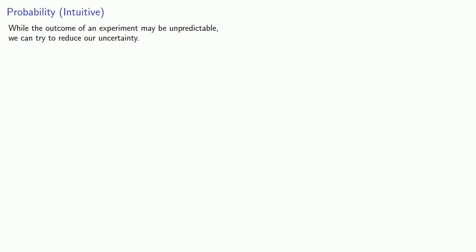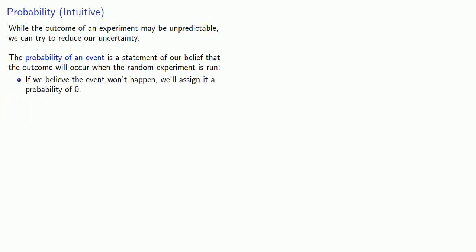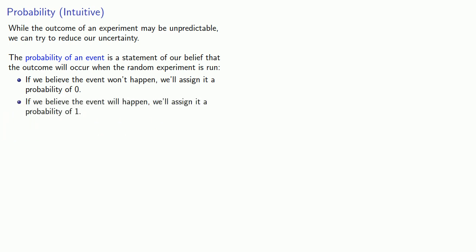So let's approach probability from an intuitive standpoint first. While the outcome of an experiment may be unpredictable, we can try to reduce our uncertainty. The probability of an event is a statement of our belief that the outcome will occur when the random experiment is run. If we believe the event won't happen, we'll assign it a probability of zero. If we believe the event will happen, we'll assign it a probability of one. Since the outcome is supposed to be unpredictable, generally speaking, an event will not have a probability of exactly zero or exactly one.